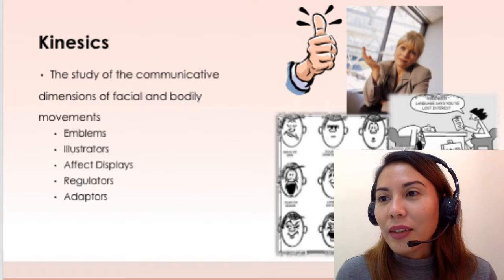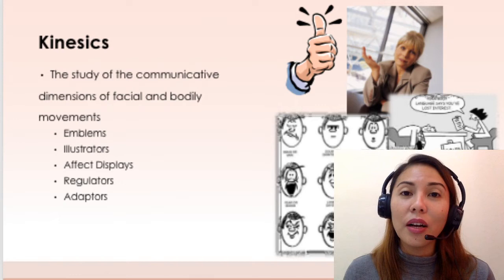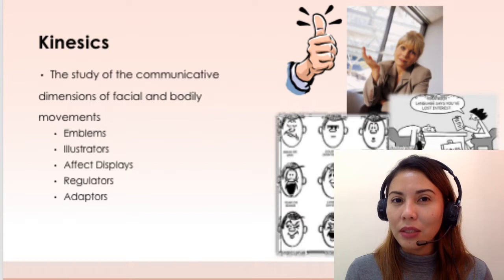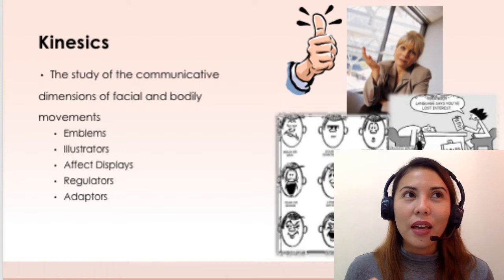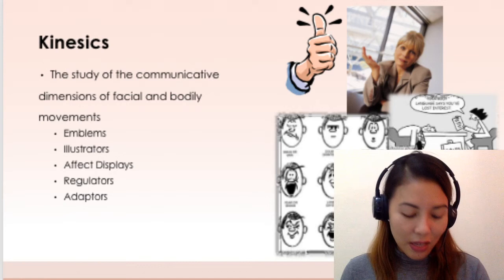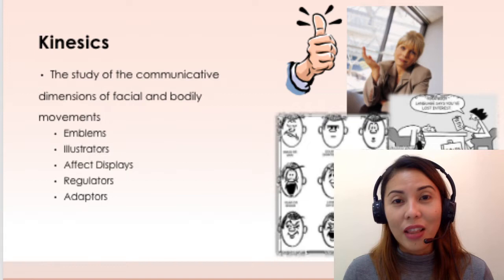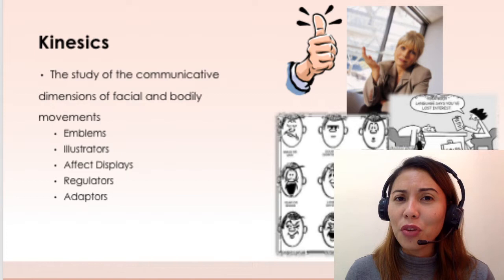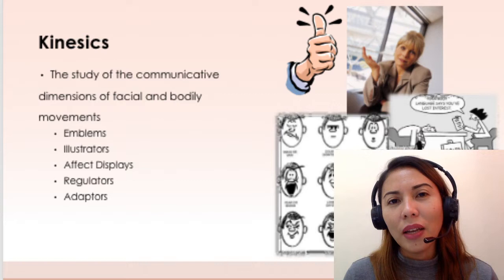The next subcategory are regulators — movements or actions that regulate conversation. These include eye contact, like when you look at a person straight in the eye while talking. Or if someone is looking at their watch instead of looking at you while conversing, that also communicates something.